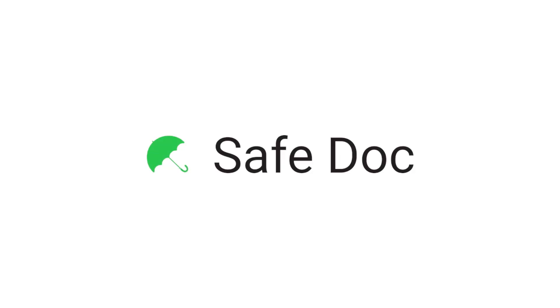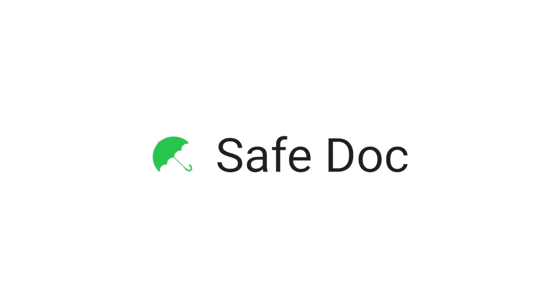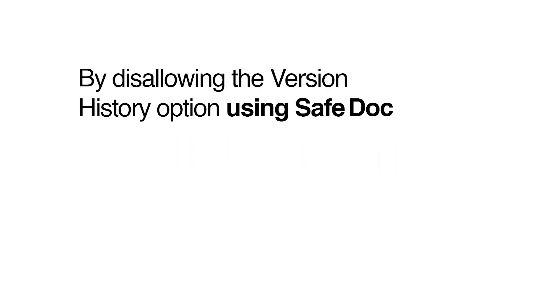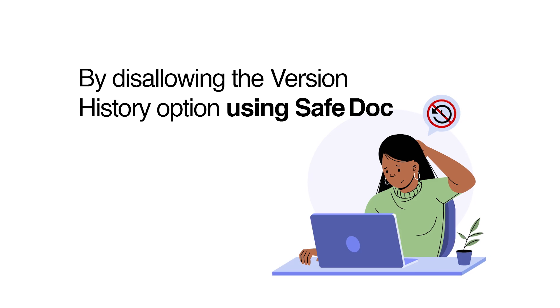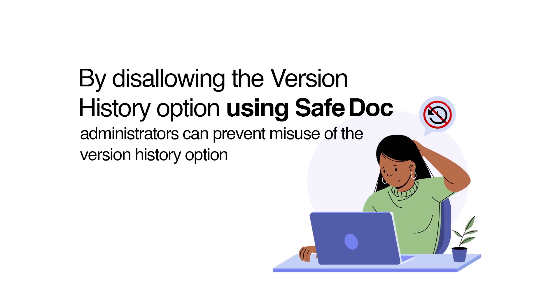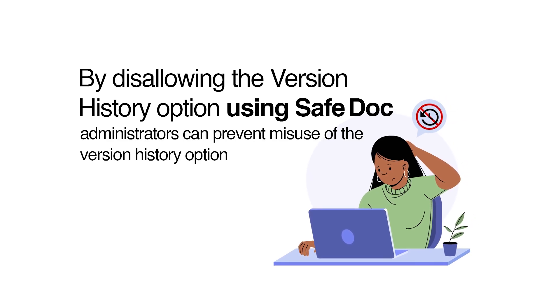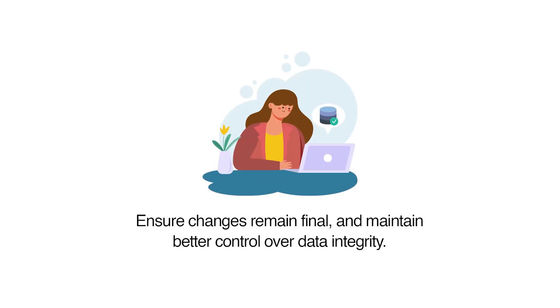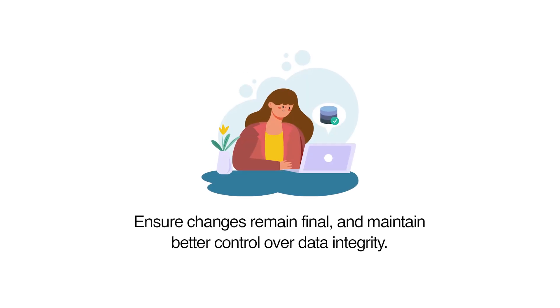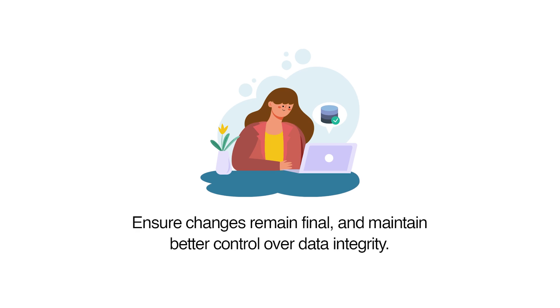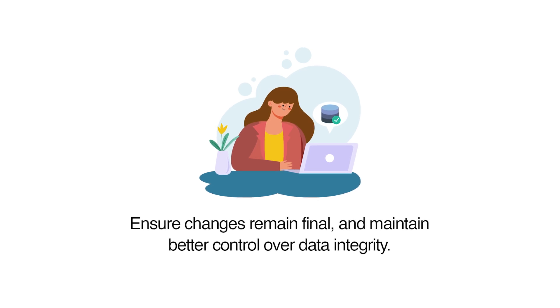But don't worry — exfanatical SafeDoc has the solution. By disallowing the version history option using SafeDoc, administrators can prevent misuse of the version history option, ensure changes remain final, and maintain better control over data integrity.